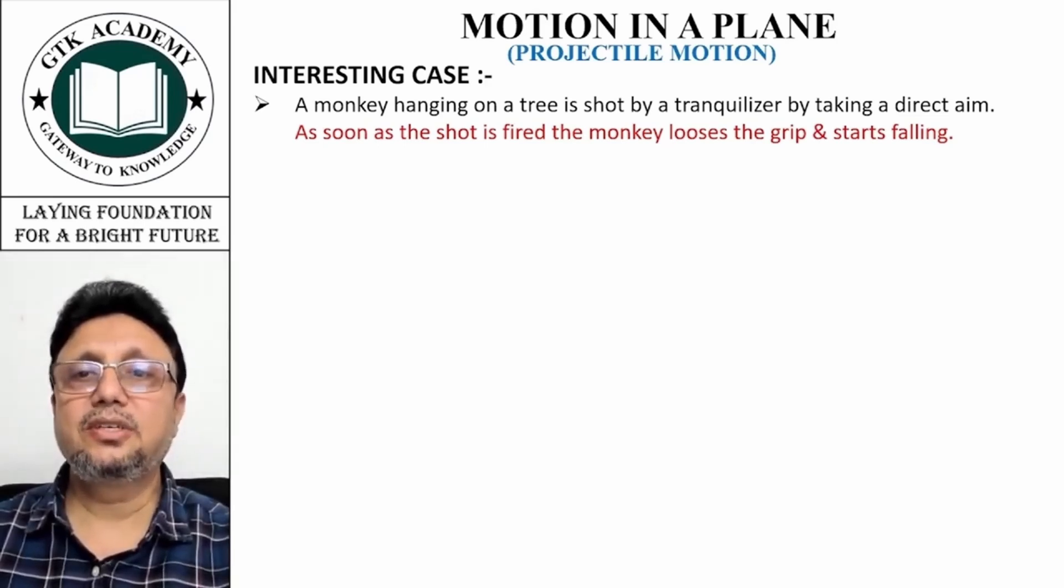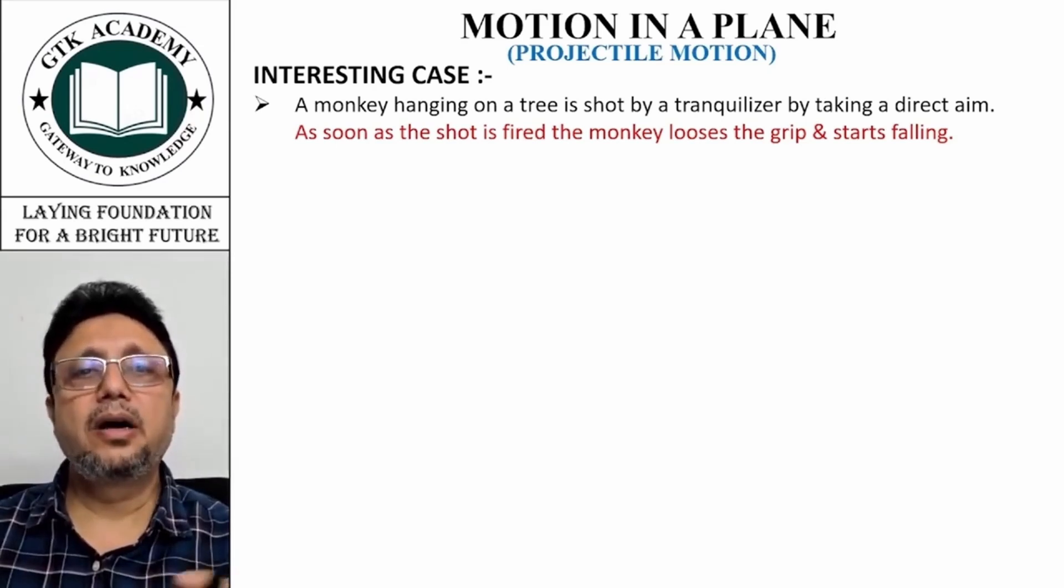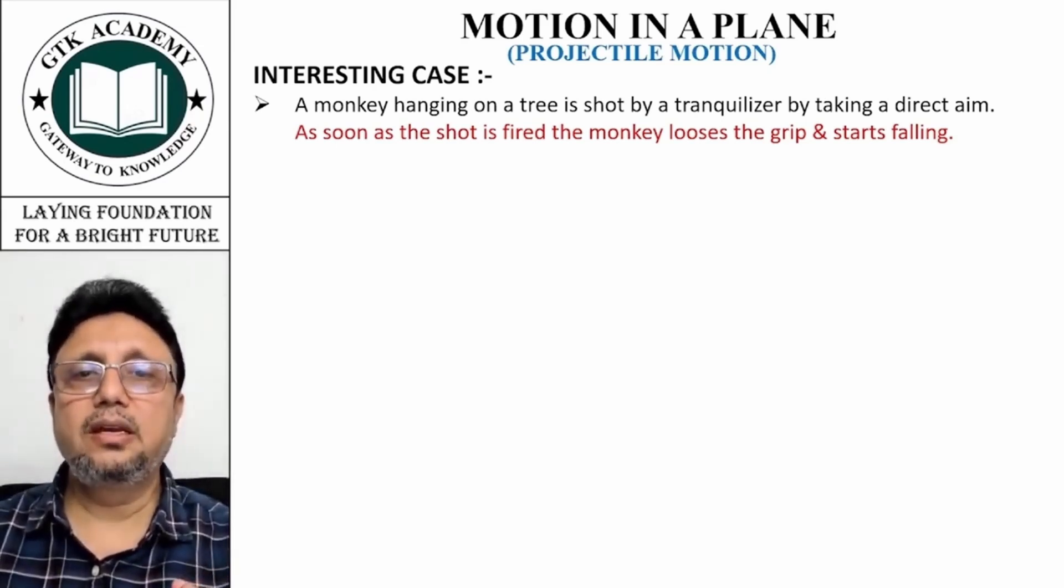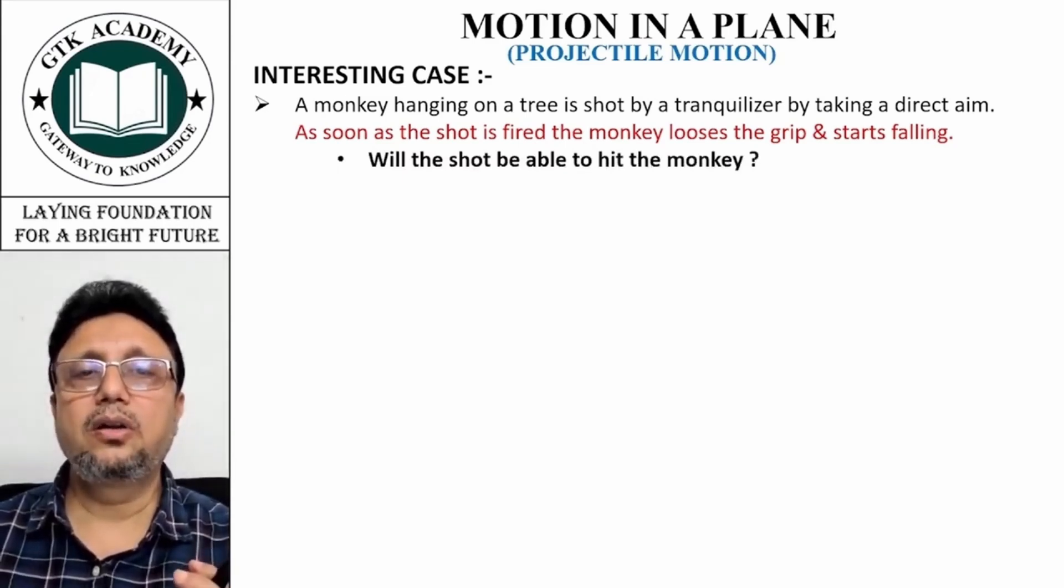This is a mischievous monkey, so we're shooting it with a tranquilizer so it loses its sense and we can catch it. But what happens as soon as the shot is fired? The monkey loses the grip and starts falling.